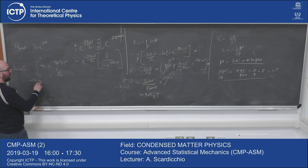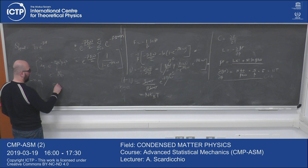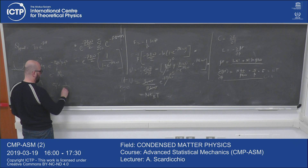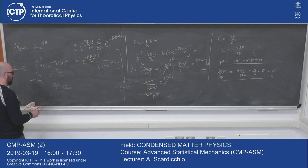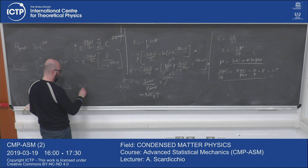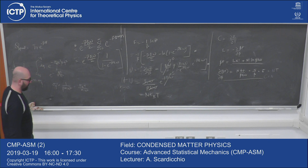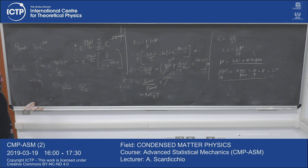Sigma_Q² is 1/(beta·m·omega²), which is k_B·T/(m·omega²). This actually becomes large when the temperature becomes large, meaning that the particle can actually go all the way to the top.